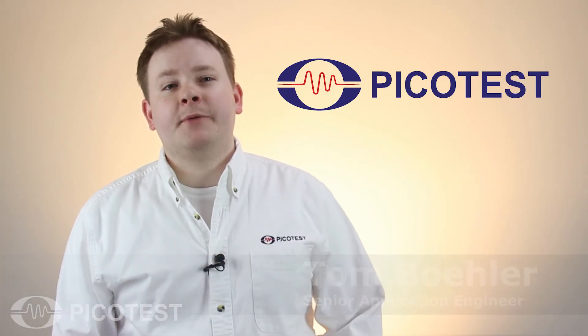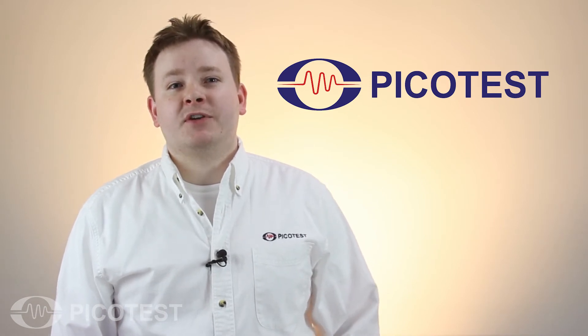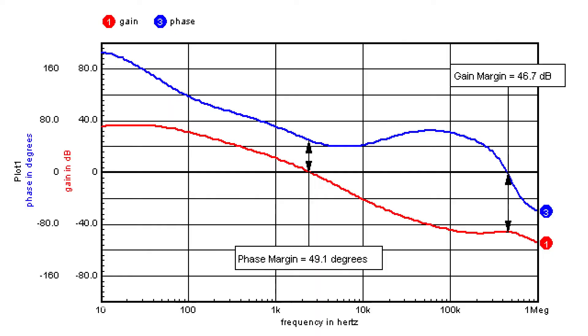Today we'll be demonstrating how to measure the stability of voltage regulators using an output impedance measurement. Phase margin is used to quantify the stability of a control system and is traditionally measured using a Bode plot.